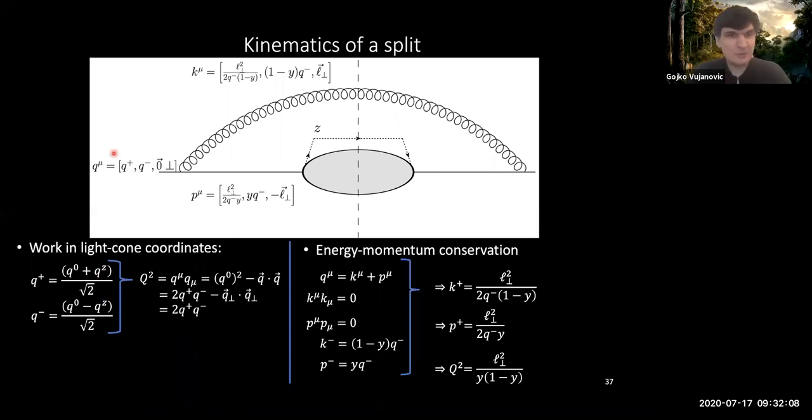Now, I will label the incoming guy here as q, whereas the two momentum that are going to be outgoing are like so. So if I assign a momentum fraction y that the minus component of the p is going to take, then by energy momentum conservation the gluon here has to have 1 minus y in such a way when I add these two guys up together I get back what I had here.